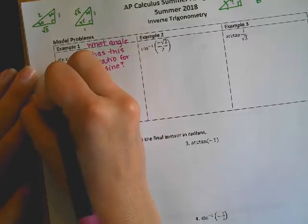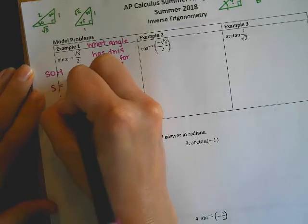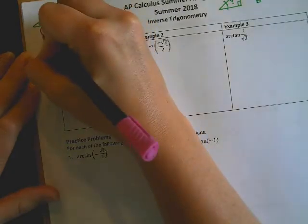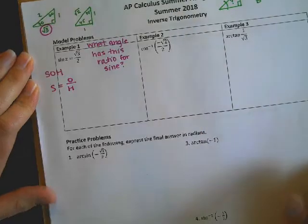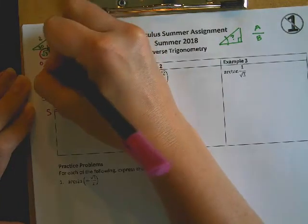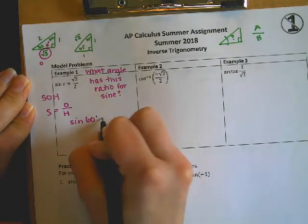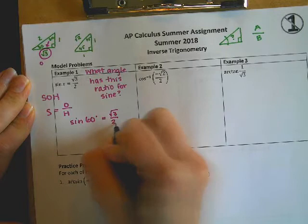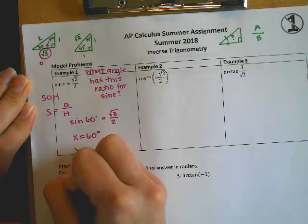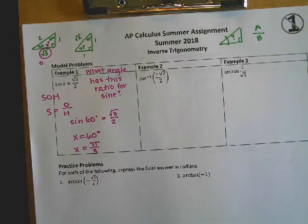So remember, sine is equal to opposite over hypotenuse. So I need root 3 over 2, I need root 3 alone to be my opposite side. So this must be the sine of 60 degrees that gives me root 3 over 2. So we could say that x is 60 degrees. We could also say that x is pi over 3.